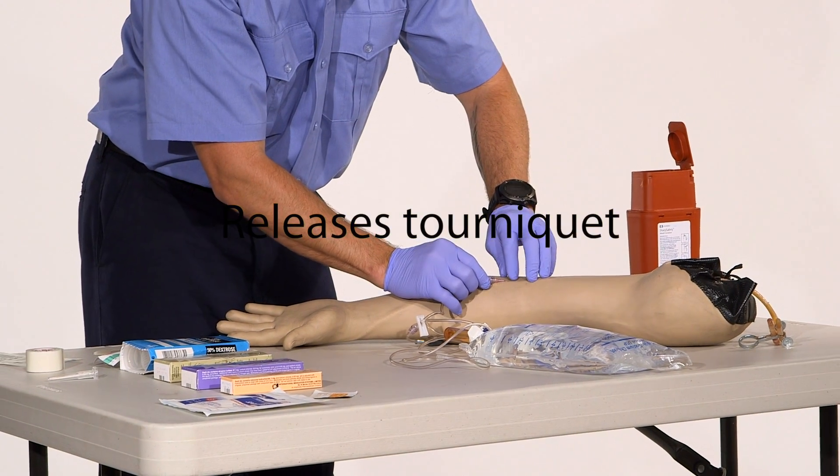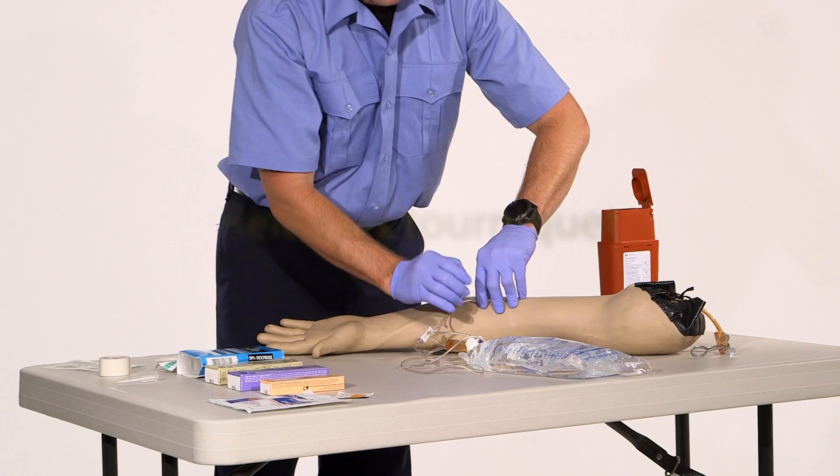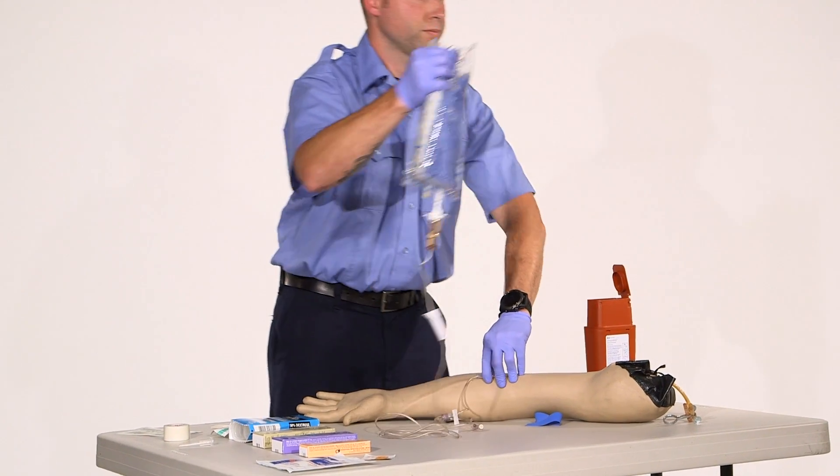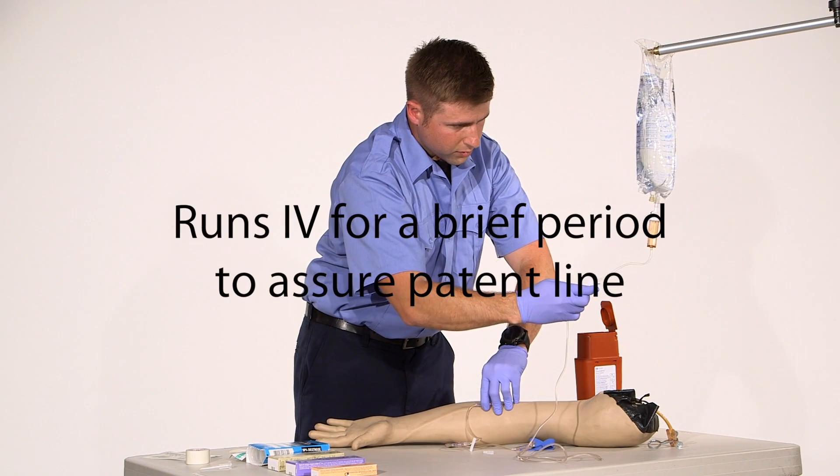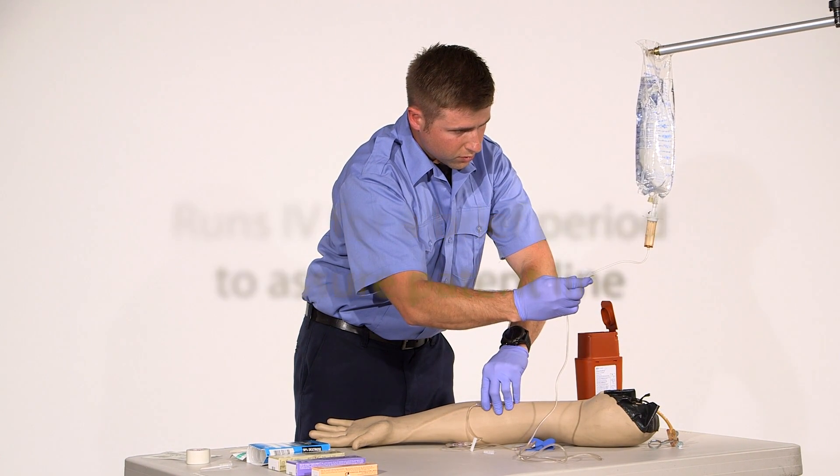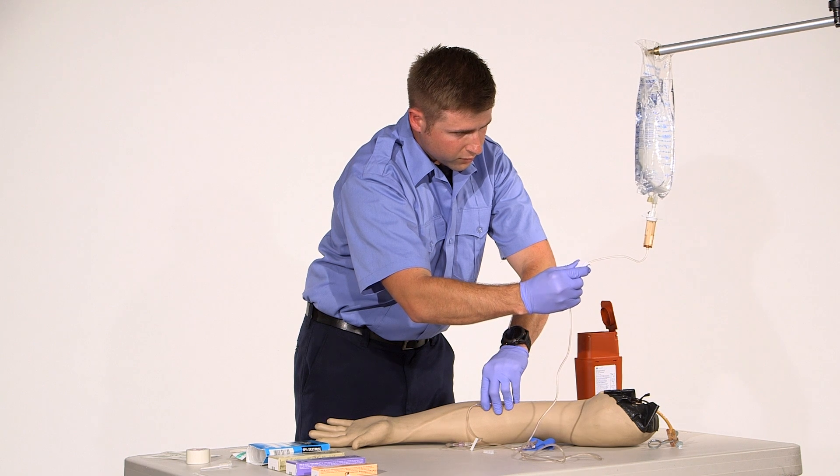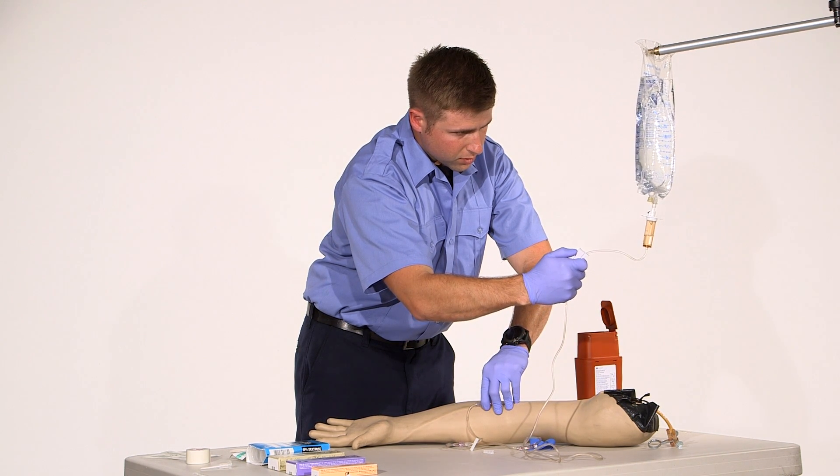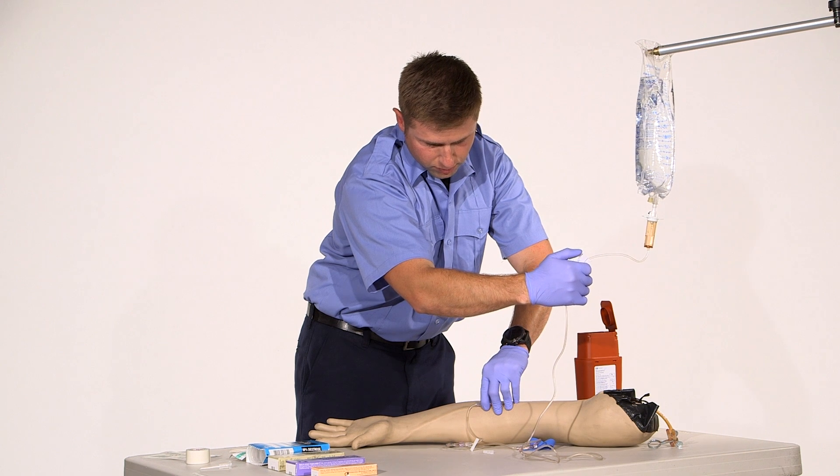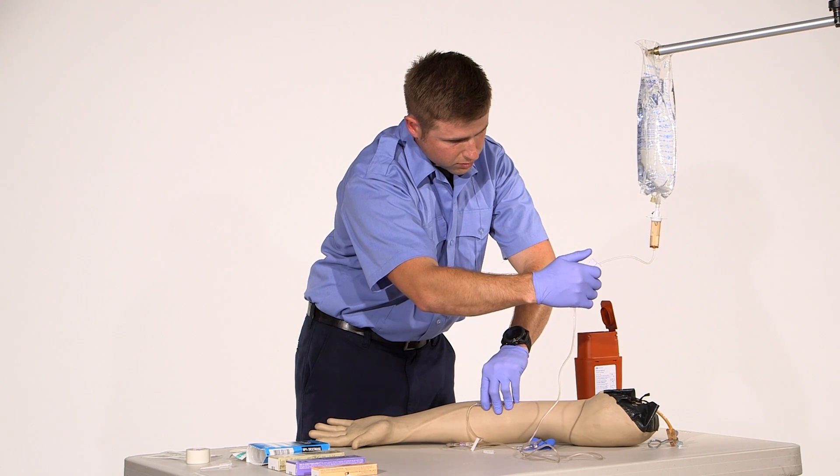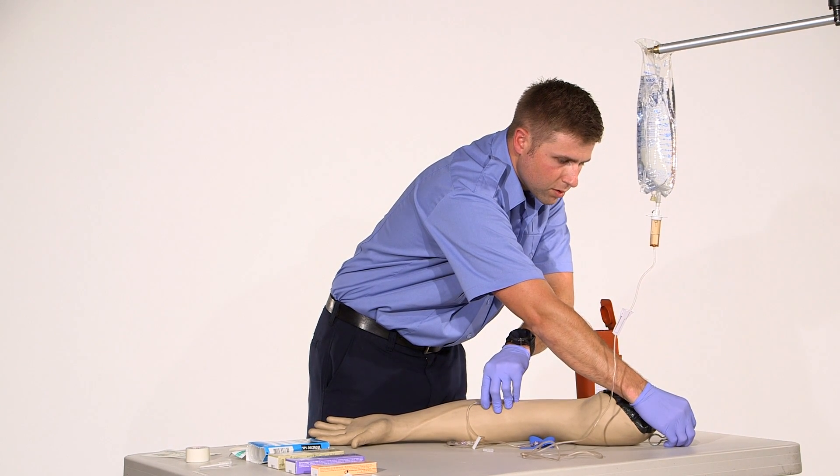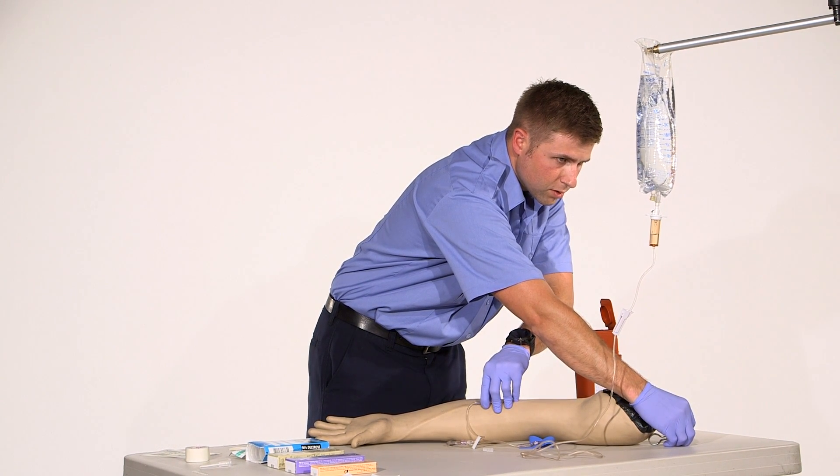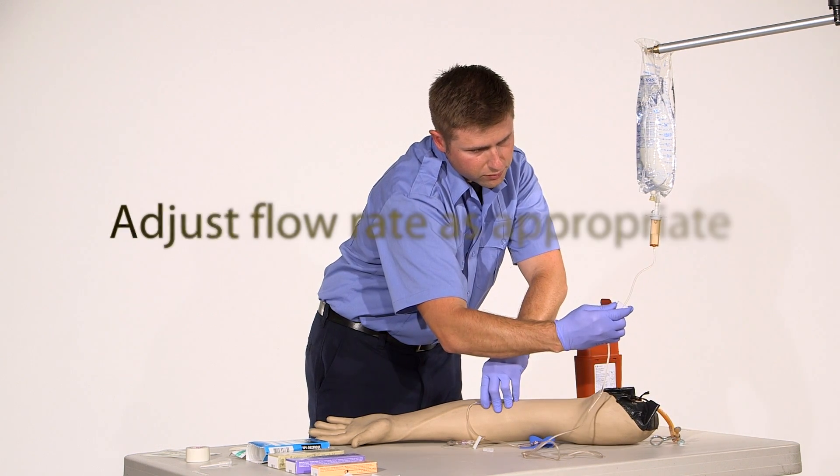Once that's on, remove the tourniquet, keep that secured, and place my drip set. I want to make sure that I'm going to flow just for a moment. Make sure I get proper flow. And bring it down to a TKO.